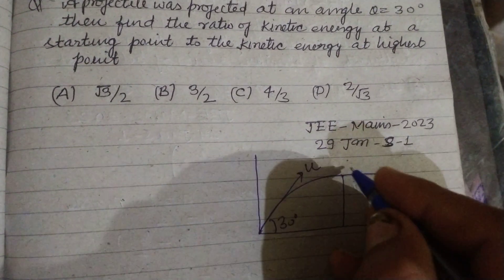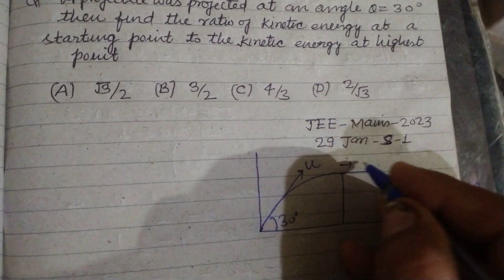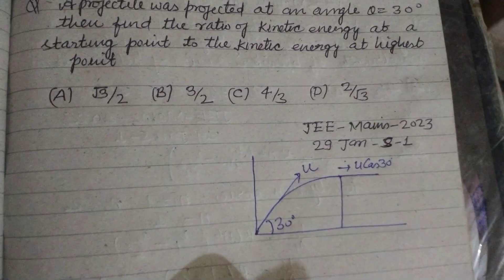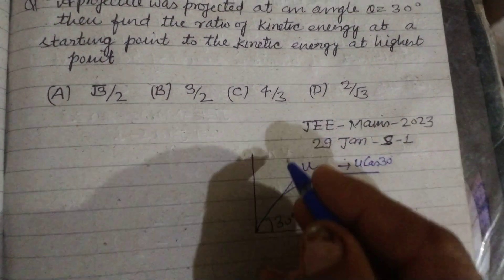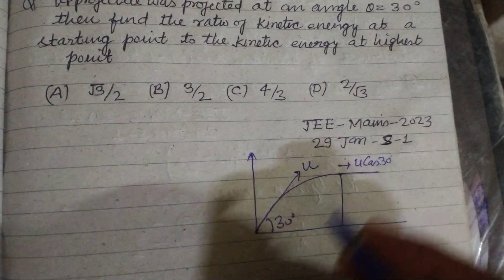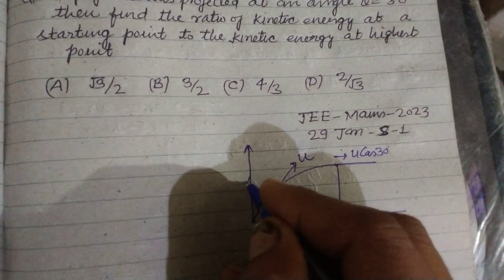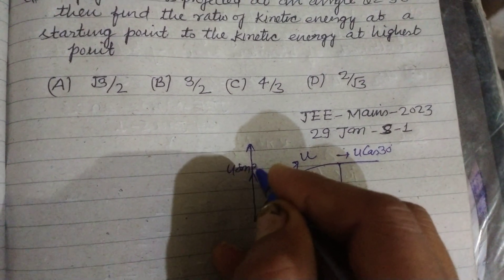You know that only horizontal velocity which is U cos 30 remains constant while vertical velocity becomes zero. So this is U cos 30 and this is U sin 30.